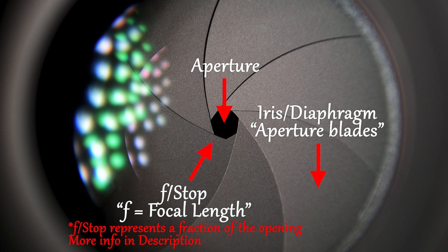The 'f' actually stands for focal length. The 'stop' is defined as a doubling or a halving of light.